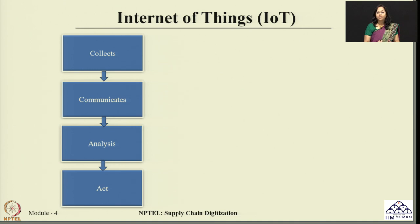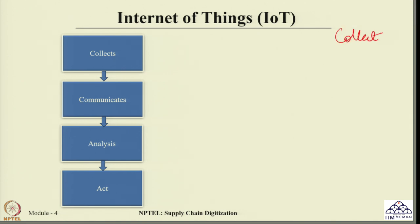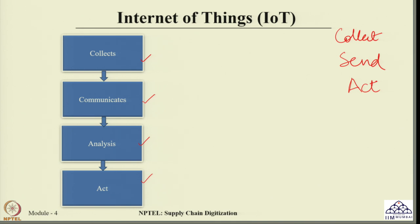Internet of Things works on three broad principles: collecting the data, sending it to a central system, and finally analyzing the collected data and taking action based on that analysis. These have been classified into four activities: collecting the data, communicating it to a central system, analyzing the data, and taking the appropriate action. These are the principles of IoT based on which it works.